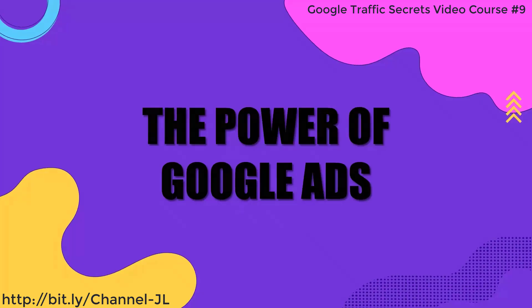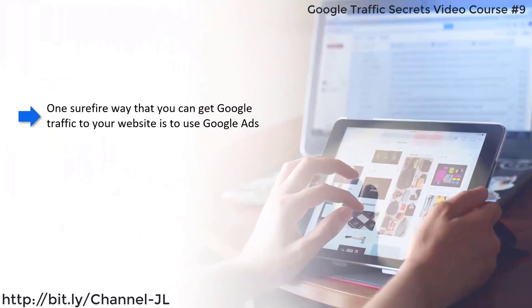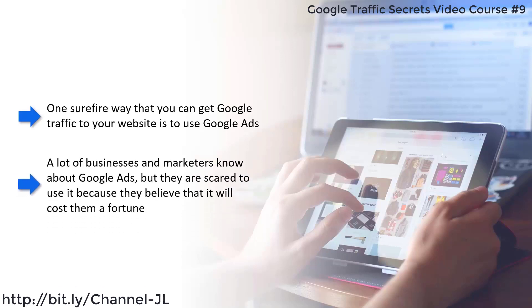One surefire way to get Google traffic to your website is to use Google Ads, their paid advertising program. It places ads on the first page against keywords that you choose. Every time a Google user clicks on one of your ads, you have to pay — it is a pay-per-click (PPC) program. A lot of businesses and marketers know about Google Ads but are scared to use it because they believe it will cost a fortune. This is not the case if you approach it in the right way.